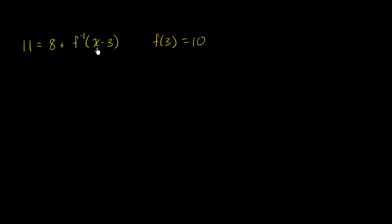So here, we can definitely simplify this equation by subtracting 8 from both sides, just so that we have f inverse by itself on one side. So if we subtract 8 from both sides, the left-hand side, 11 minus 8 is 3, and the right-hand side is f inverse of x minus 3. Or I could write this as f inverse of x minus 3 is equal to 3.